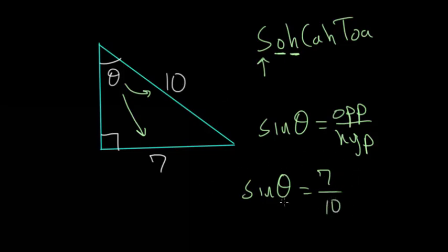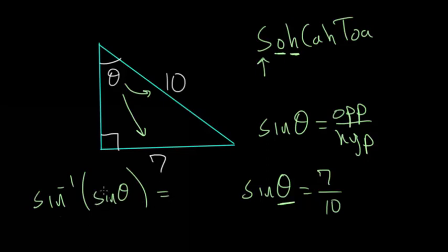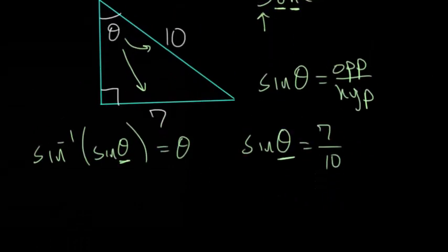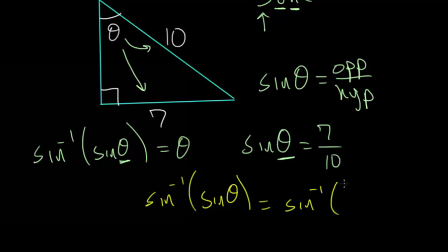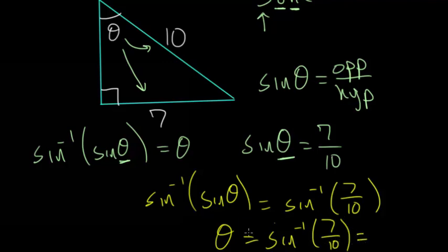Once we have this trig ratio set up, we want to solve for theta. Just like the previous problem, we want to use the inverse sine function. We know that putting the sine of theta inside the inverse function causes the function and its inverse to cancel each other out, leaving just theta. So we take the inverse sine of each side: the inverse sine of the sine of theta equals the inverse sine of 7 tenths. That simplifies to theta equals the inverse sine of 7 tenths. Plugging this into the calculator gives us approximately 44.43 degrees.